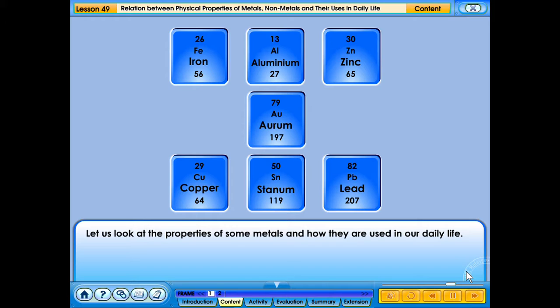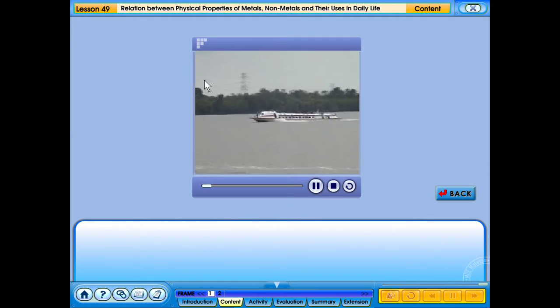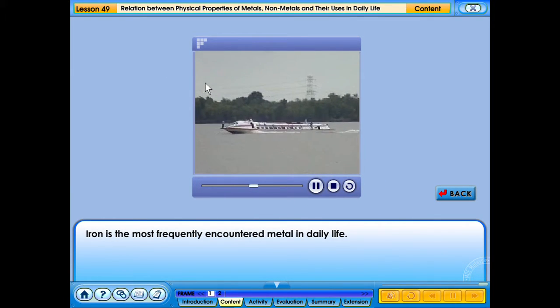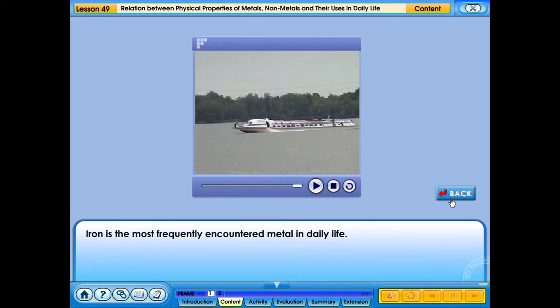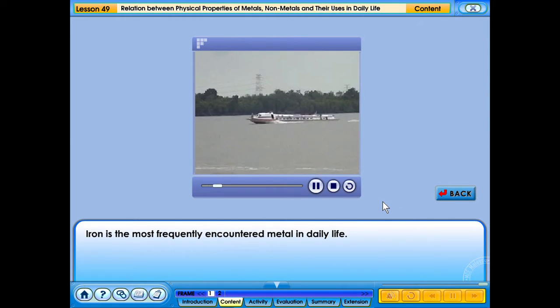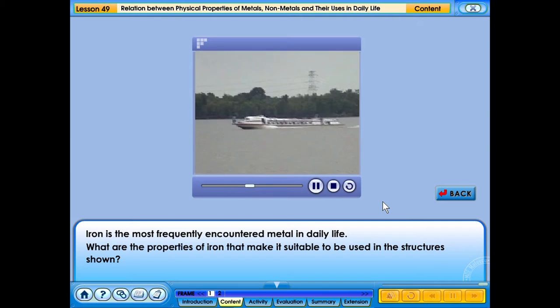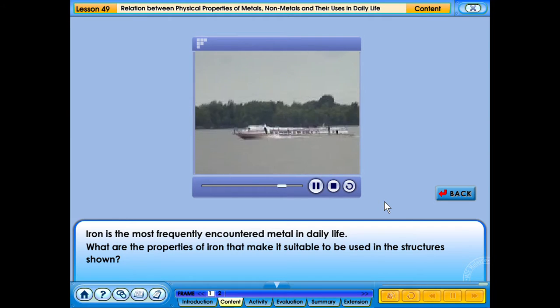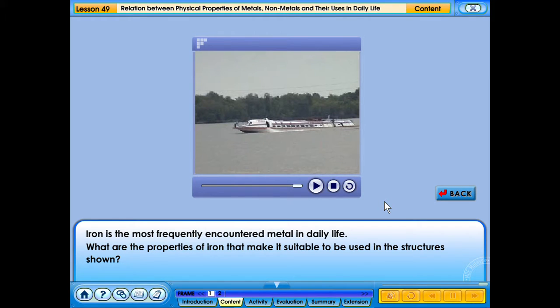Click on the various metals. Iron is the most frequently encountered metal in daily life. Observe the videos to learn of some of the uses of iron. What are the properties of iron that make it suitable to be used in the structures shown? Click the check button to find out.